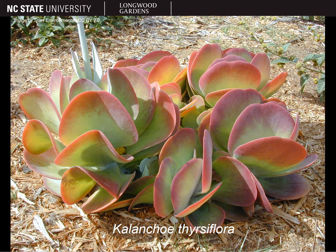Kalanchoe thyrsiflora grows in a basal rosette of paddle-shaped, powdery, gray-green leaves with entire margins and a retuse leaf apex. Retuse means that there is a small notch at the apex. This species is monocarpic, so the rosette will die after flowering. And even though the leaves are typically grayish green, if they're grown in bright sun, like many of the succulents in this unit, they will take on a nice pinkish to red color.